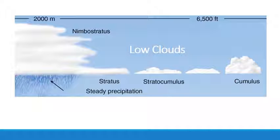Low clouds form in low altitude ranges, below 6,500 feet. They don't really have their own prefix like the high and middle clouds do, but you can see that three of these four clouds have the word 'strat' in them. Remember that there are also middle-level altostratus and high-level cirrostratus clouds with that word in their names too. We'll focus on three clouds in the bottom layer: nimbostratus, stratus, and stratocumulus. Plain old cumulus clouds will be discussed in the section on vertically developing clouds.